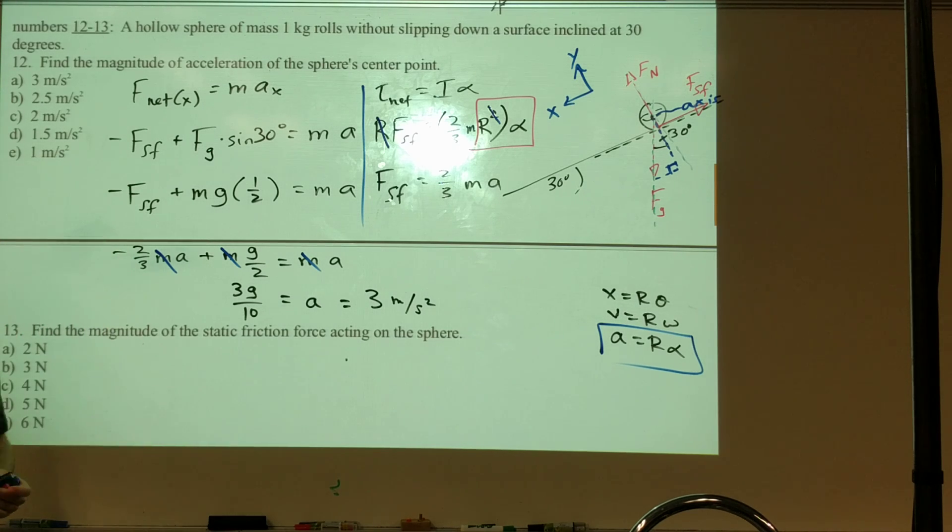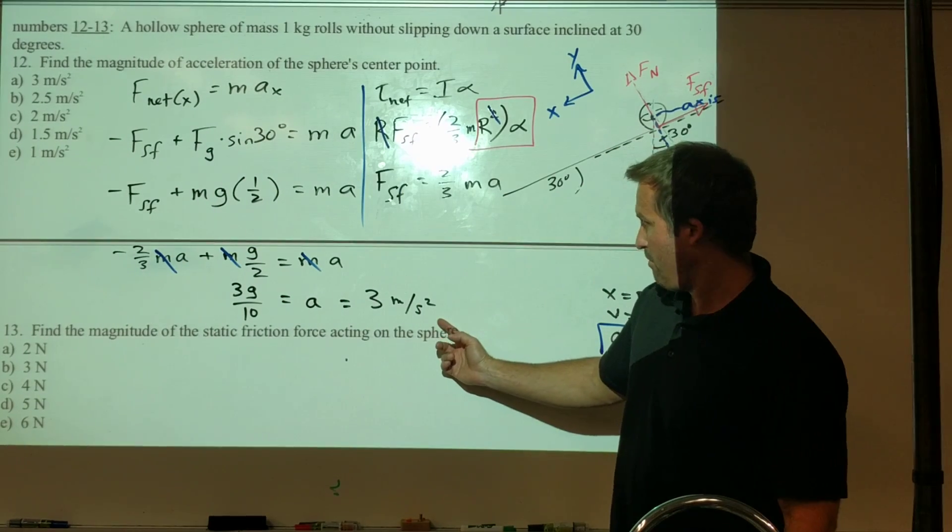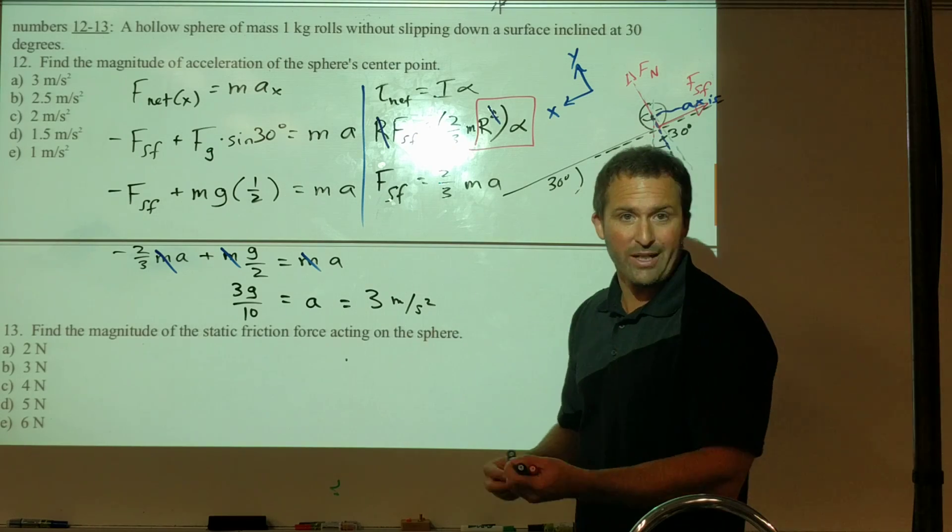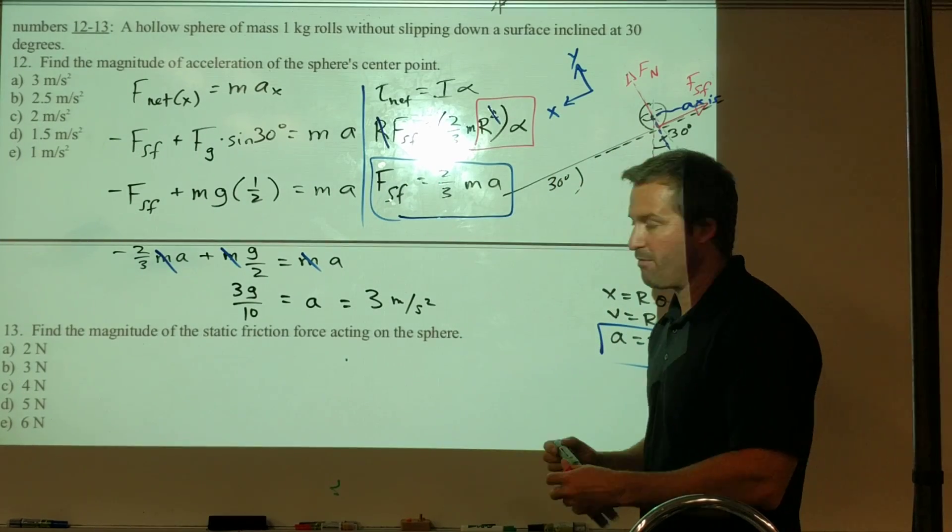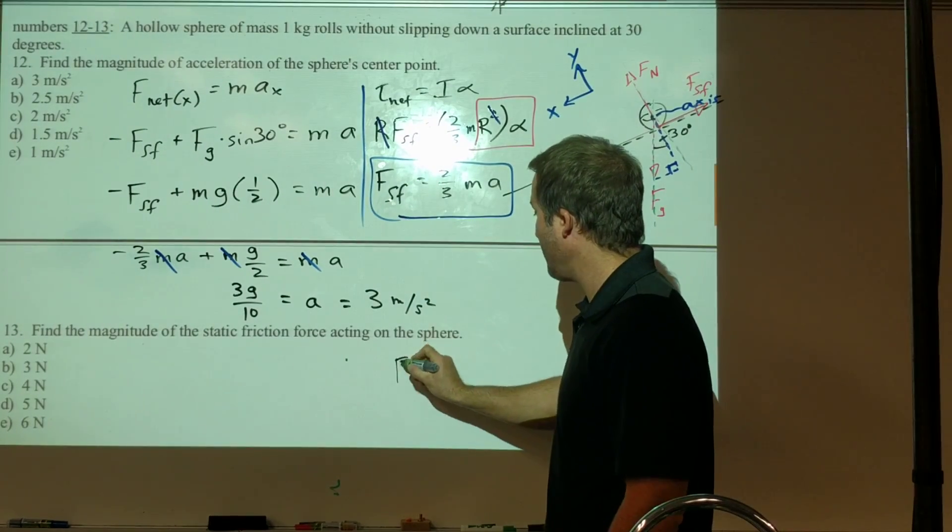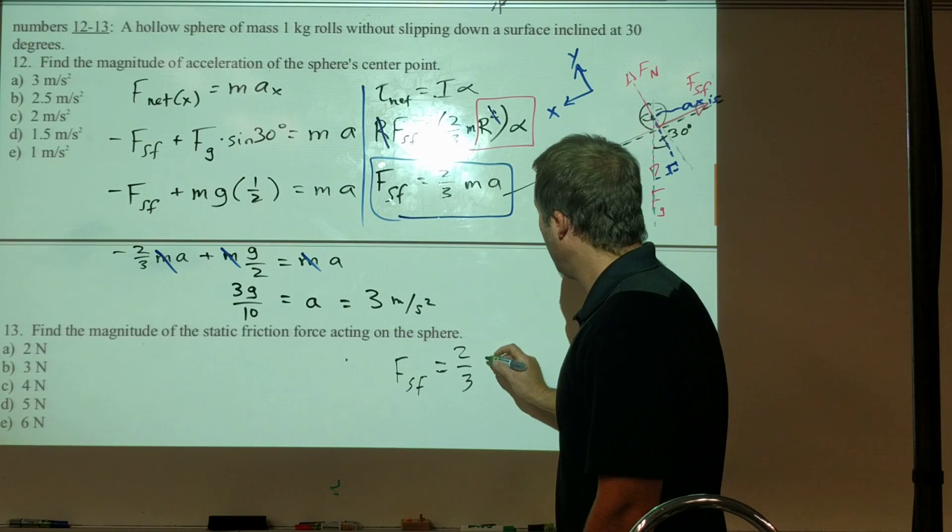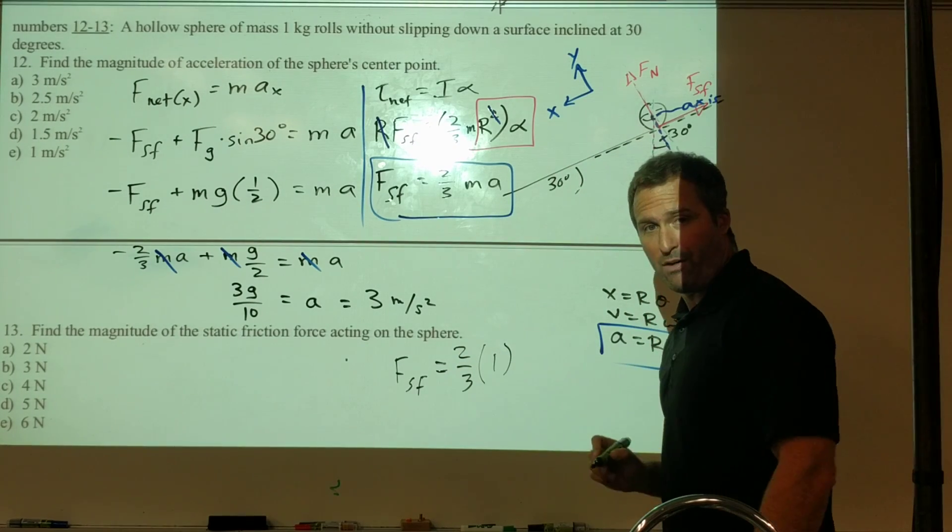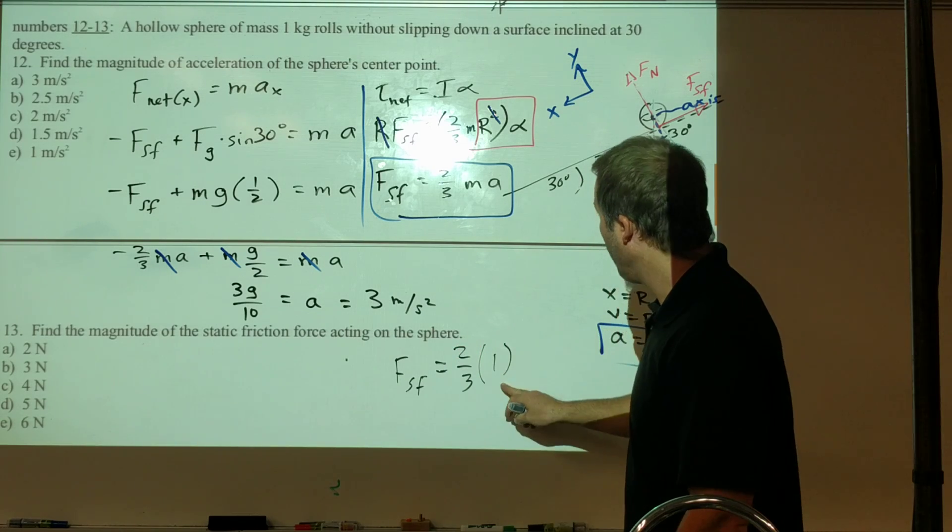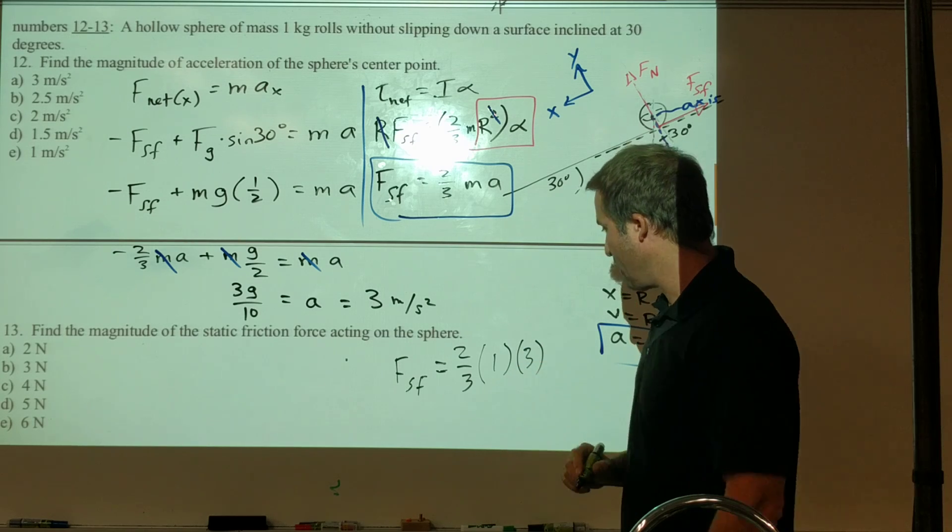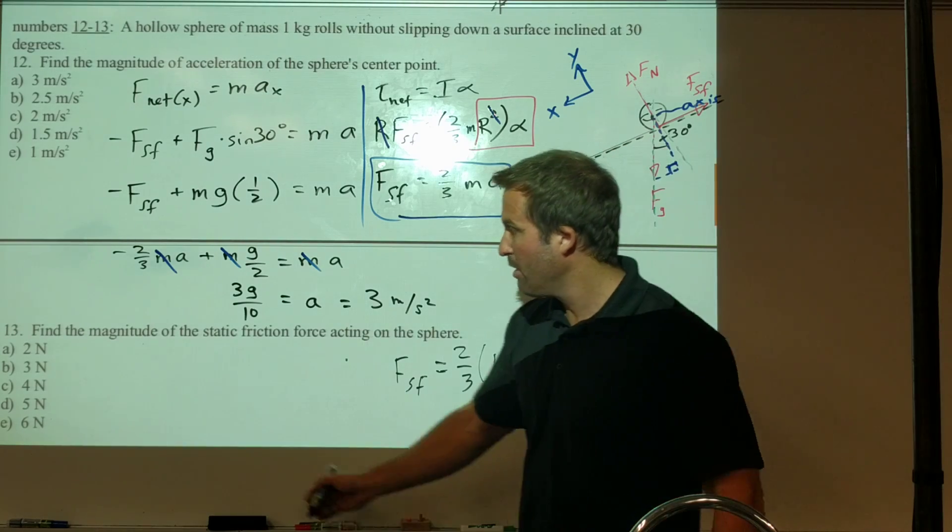At this point, number 13 is going to be relatively easy for us. Because now that we've got a equals 3 meters per second squared, we can just plug it into one of our other equations. This one looks pretty easy to find the magnitude of the static friction force. We're going to have to plug in the mass of our object - 1 kilogram - and 3 meters per second squared, using all SI units. We can see that works out to be 2 newtons, which is answer B.